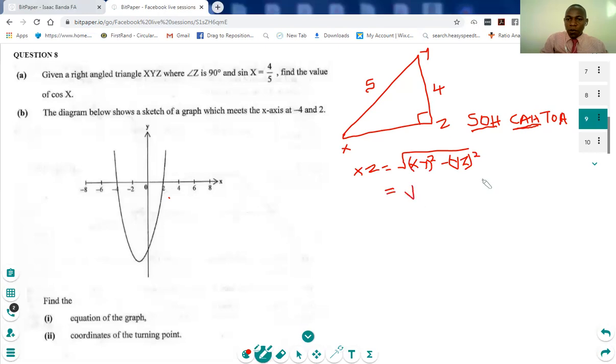XY is 5, 5 squared is 25, so 5 squared minus, now YZ is 4, so 4 squared. So 25 minus 16 is 9, so square root of 9 is equal to 3.